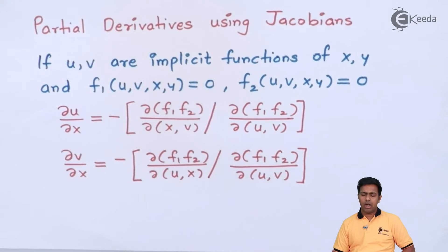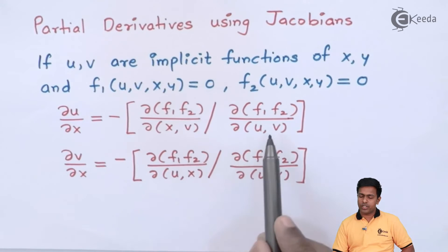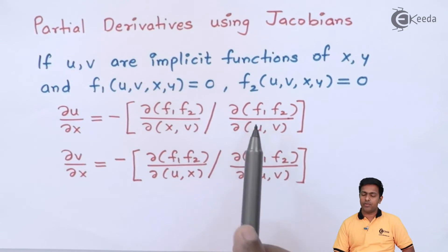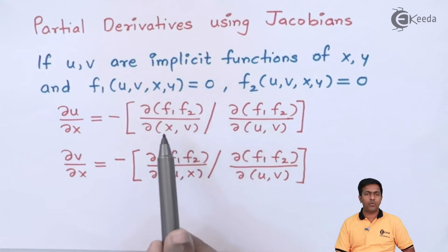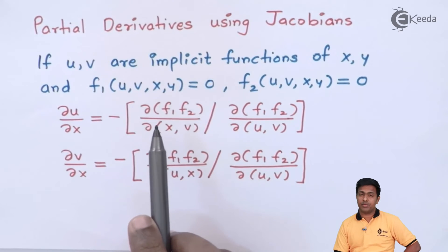So how we are getting the answer? You have to understand the pattern. If you observe the denominator, then here we have the Jacobian of f1,f2 with respect to u,v. And in the numerator what we are doing is we are just taking same value but we are changing few terms.